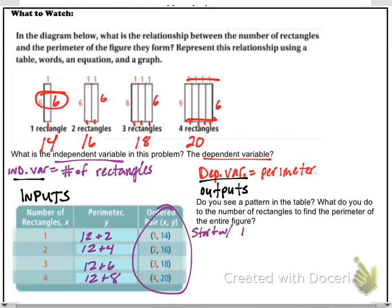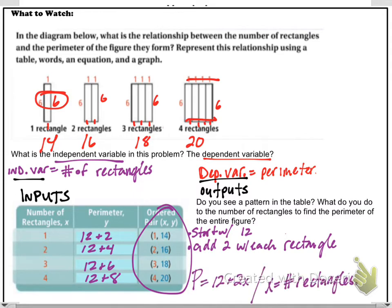And do we see a pattern? Yeah, we're starting with 12, and then we're adding 2 with each rectangle we add. So giving us a function, our perimeter is going to be 12 plus 2x, where x is the number of rectangles.